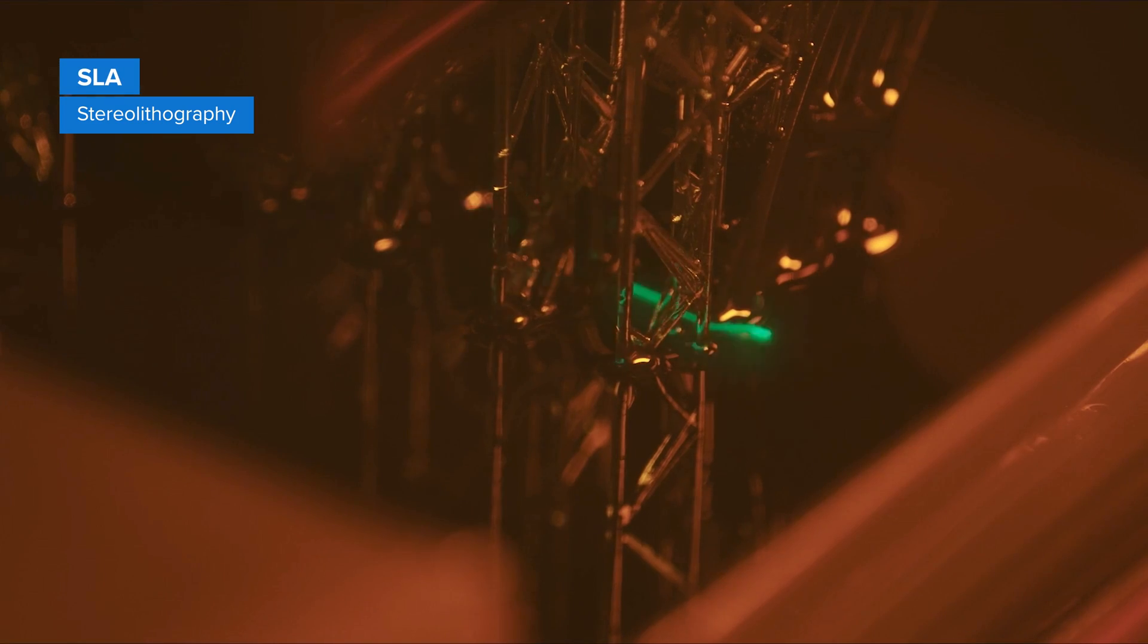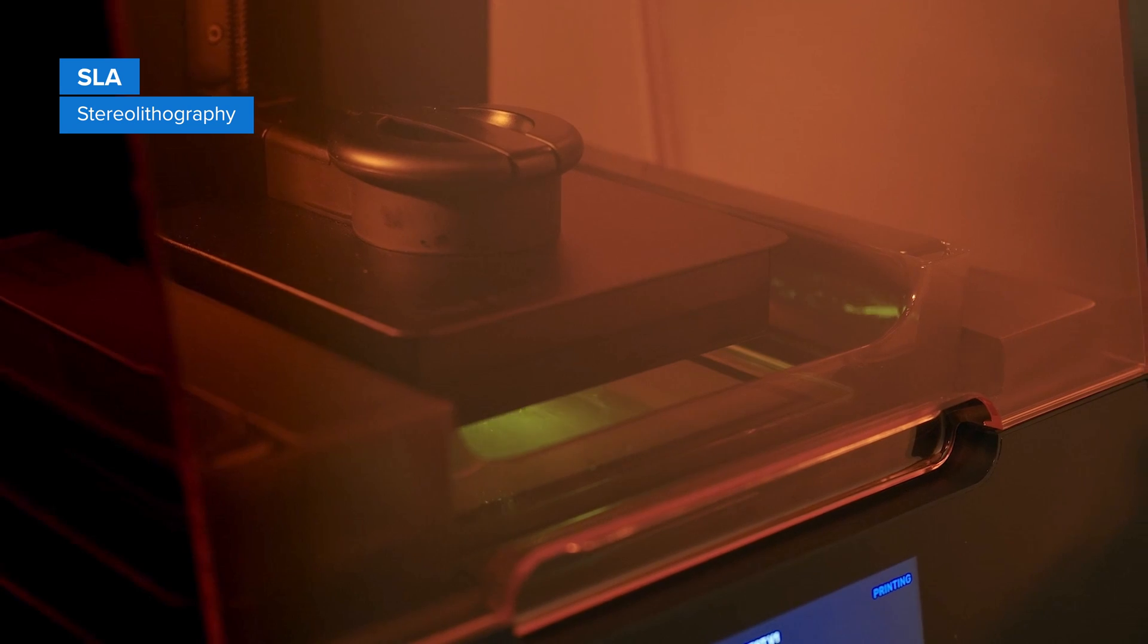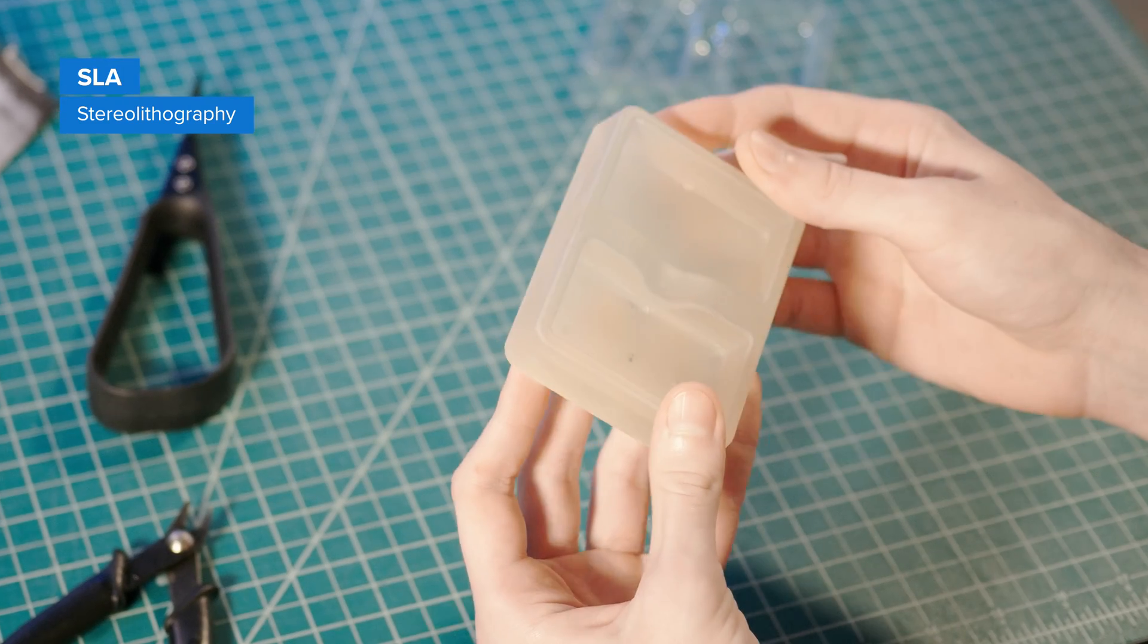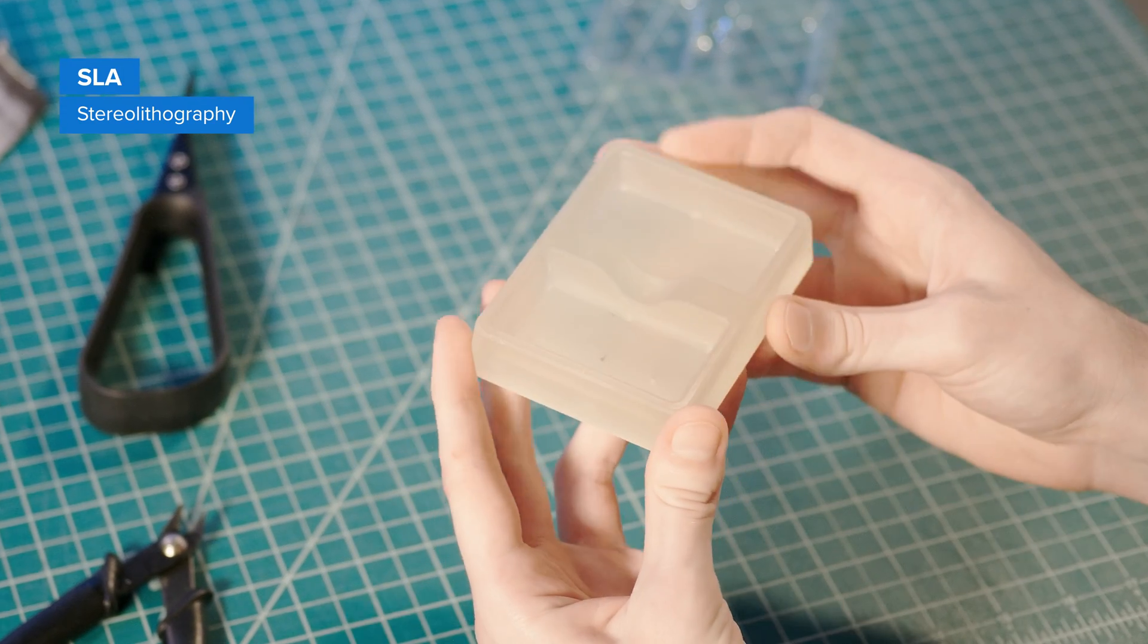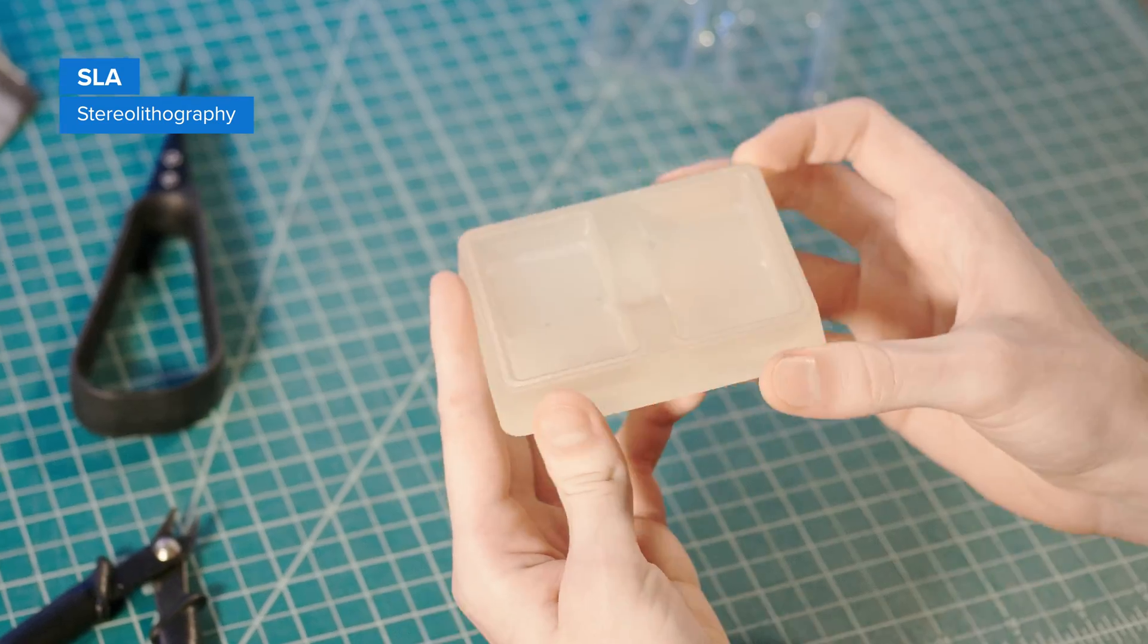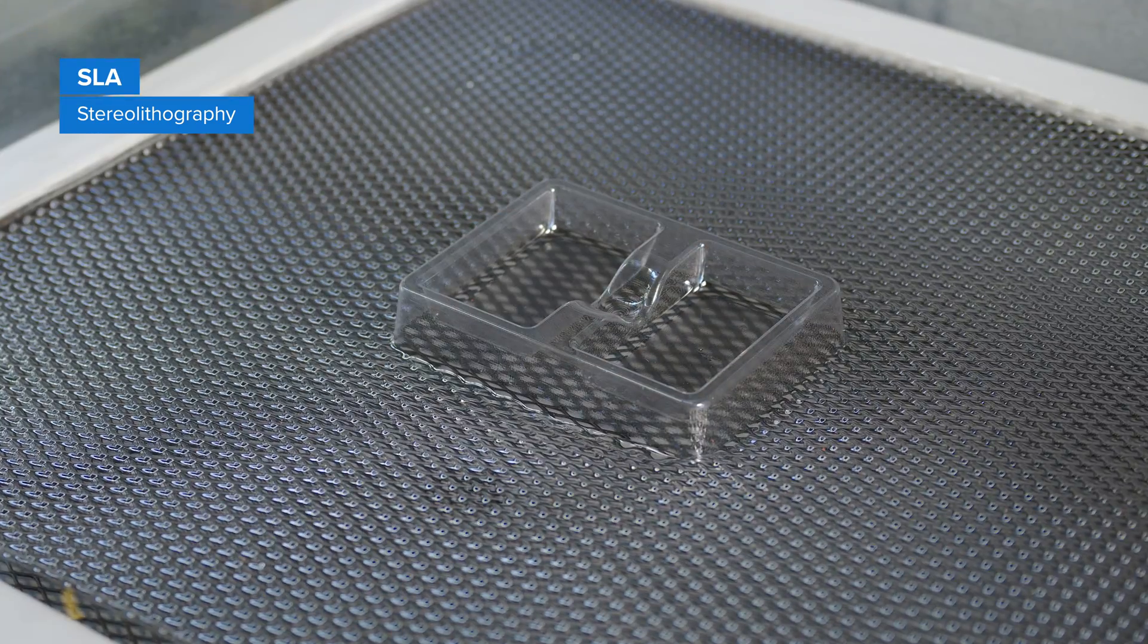Stereolithography or SLA 3D printing technology is a great choice for molding. It is characterized by a smooth surface finish and high precision that the tool will transfer to the final part, and that also facilitates demolding.